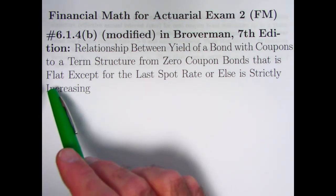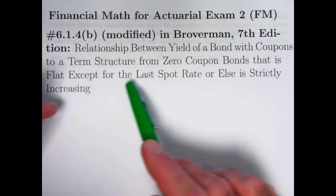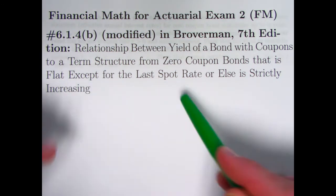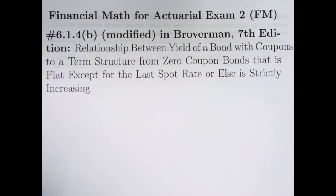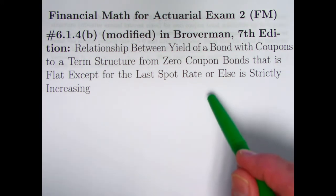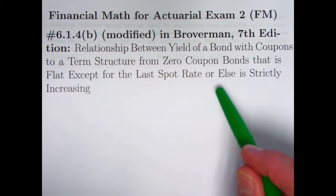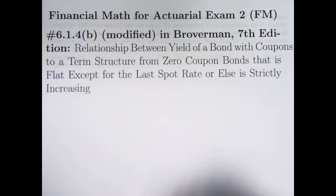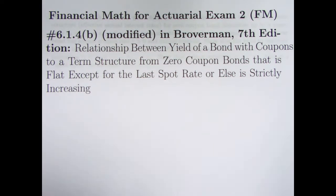Two situations we're thinking about here. What's given in the book is that the term structure is flat except for the last spot rate, which happens to be higher than the other ones. Or else something new that I've added: thinking about a strictly increasing term structure, a strictly increasing yield curve.